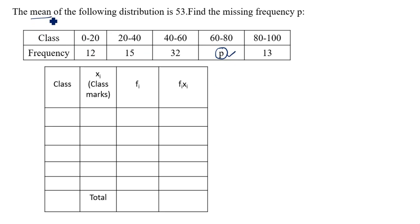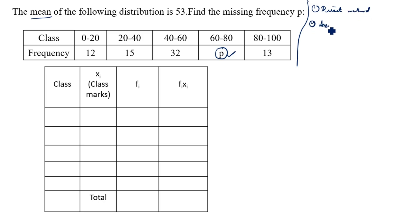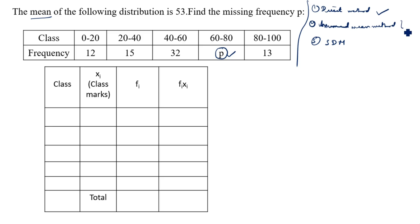The mean is given, so what mean methods are there? The first one is direct method, the second one is assumed mean method, the third one is step deviation method. In this question no method is mentioned, so we will take the direct method — compared to the others, the direct method is very easy.